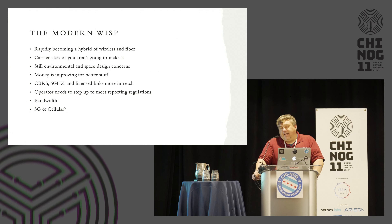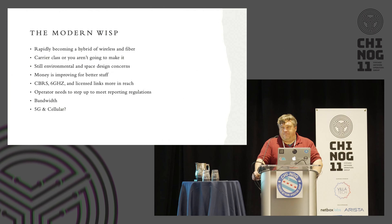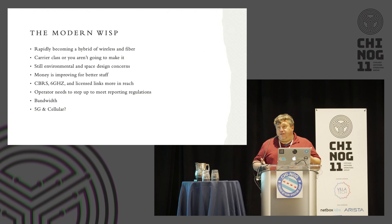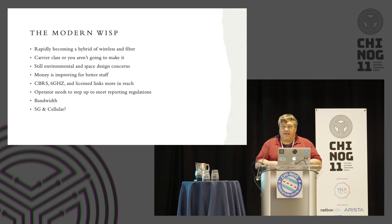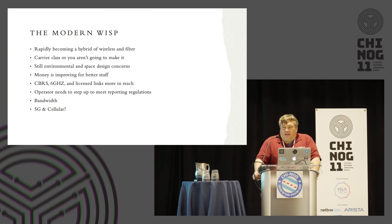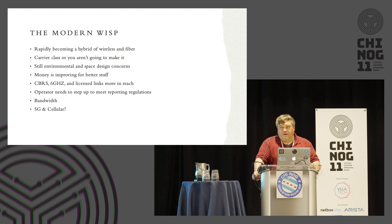Money is improving things for some of these folks — grant money, local money. Now they're getting access to licensed bands. If you've heard of CBRS, that's the buzzword among a lot of wireless folks including the 5G carriers. They want as much spectrum as they can for data. Spectrum is bandwidth — the more spectrum you have, the faster you can shove bits across those airwaves. The modern WISP also has reporting regulations — they have to report customer data to the FCC every quarter.